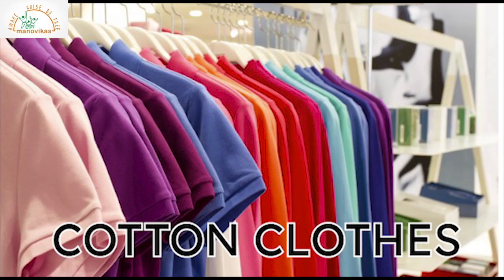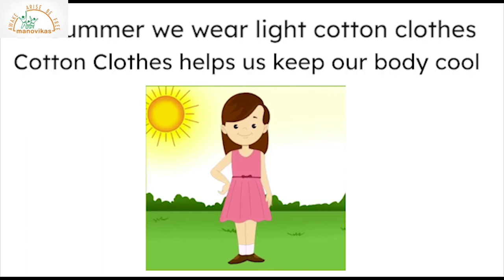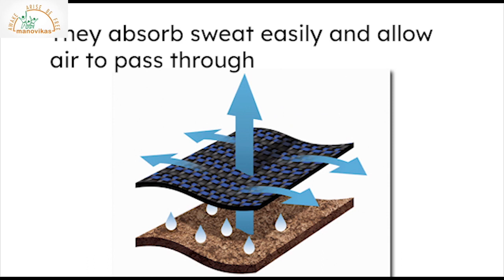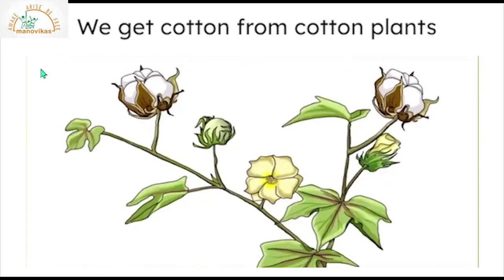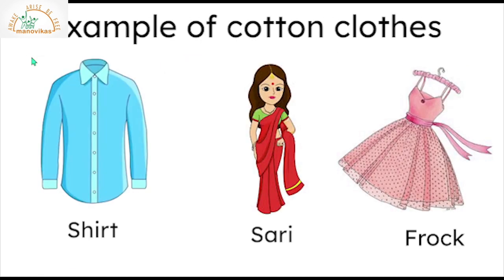Cotton clothes: in summer we wear light cotton clothes. Cotton clothes help us keep our body cool. They absorb sweat easily and allow air to pass through. We get cotton from cotton plants. Examples of cotton clothes include shirts, sarees and frocks.